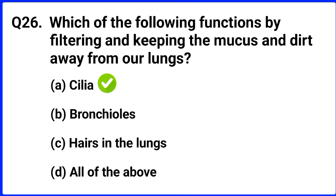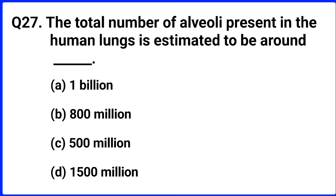Question number twenty-seven. The total number of alveoli present in the human lungs is estimated to be around? The right answer is option C: 500 million.